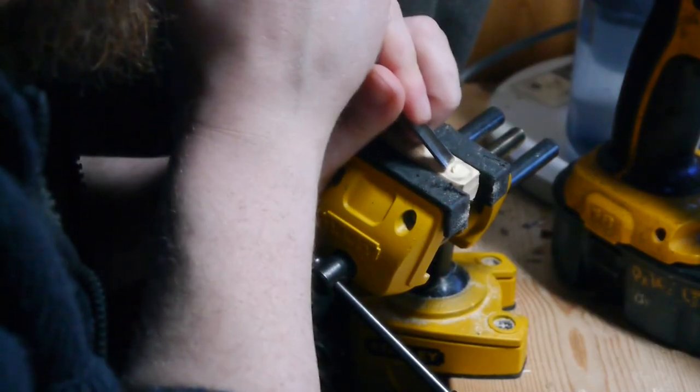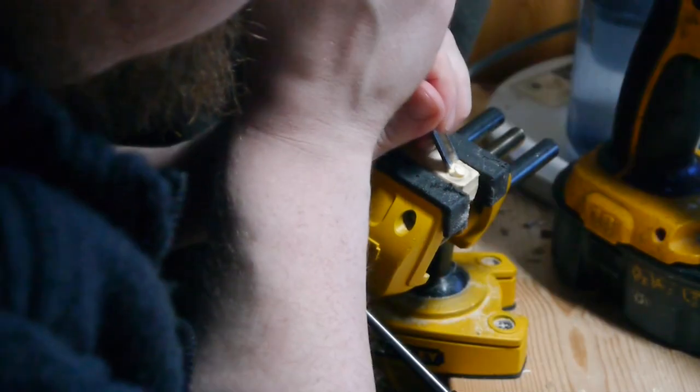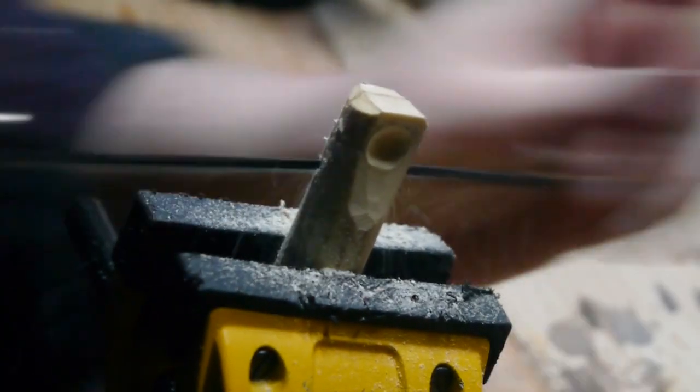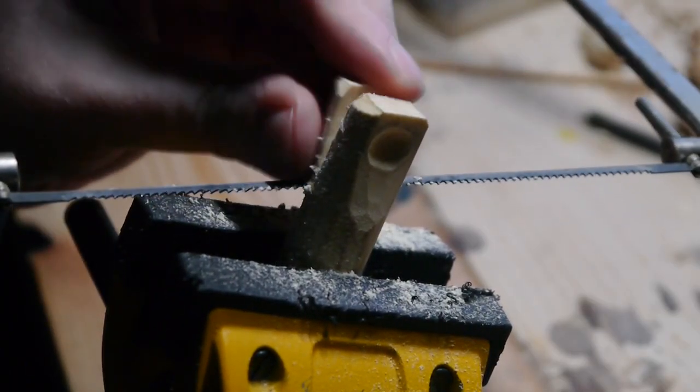I decided to treat this like a tiny spoon. Carve out the curved inside part before moving onto shaping the outside. Once again the coping saw gets rid of the bulk of the waste before I start using the knife to make the area behind the scoop curved.